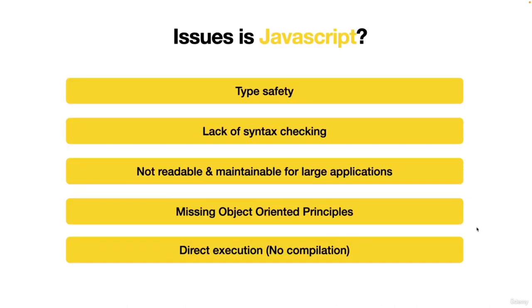How does JavaScript work? We'll write a simple JavaScript file to understand how code is written in JavaScript, how different variables are created, how it attaches with an HTML file, and how it helps a website function. We'll also check how type safety issues arise, how syntax checking is missing, how it's not readable for large code, how object-oriented principles are missing, and how compilation problems exist with JavaScript.